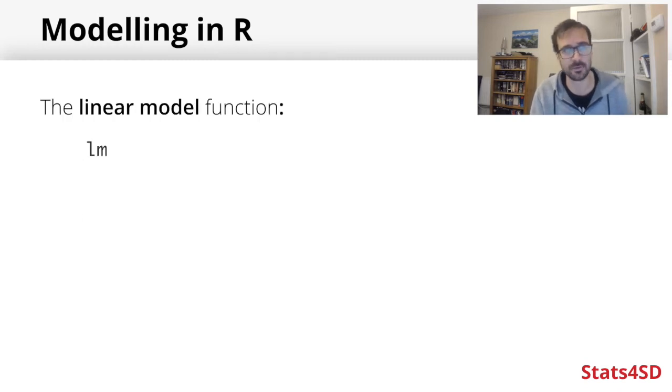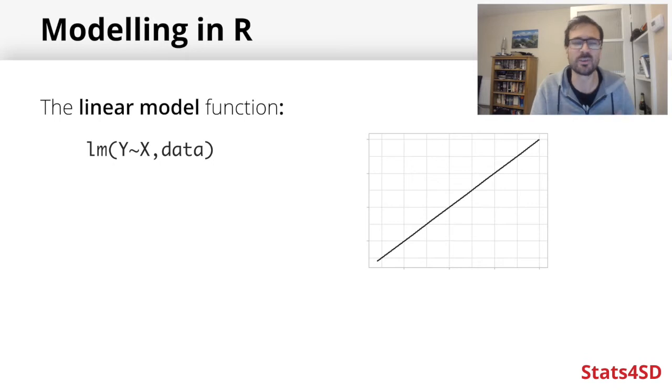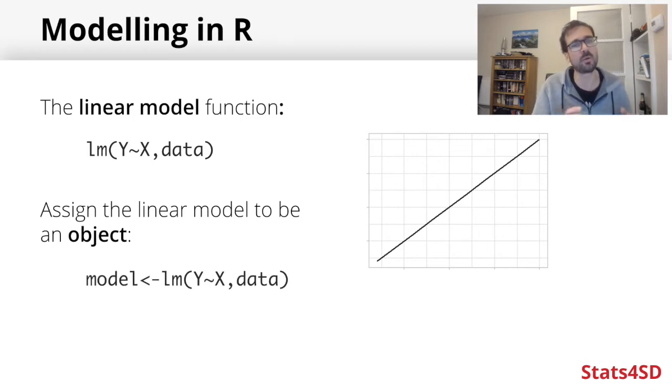The main workhorse function you've been seeing so far, this is the LM function, the linear model function. The syntax for this works quite similar to what we've seen before probably with t-test, where we have this formula notation of y tilde x, where y and x are the variables in our data set, and then we have a comma and the name of our data. Unlike a lot of other functions which are more simple statistical tests, here what we look to do is we always generally save this as an object, a model object, because then we can use different functions to access different summaries or different kinds of post hoc testing from the model that we have created.